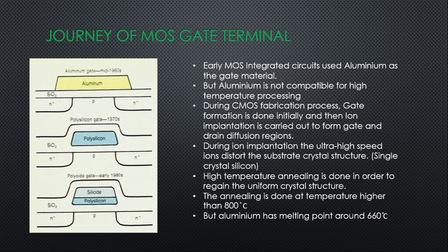Let's understand why this transition was necessary. Early MOS integrated circuits used aluminum as gate material, but it was soon realized that aluminum is not compatible with high temperature processing. The CMOS fabrication process forms the gate at the beginning and then performs ion implantation to form the drain and source regions. In ion implantation, high-speed ions distort the substrate crystal structure.